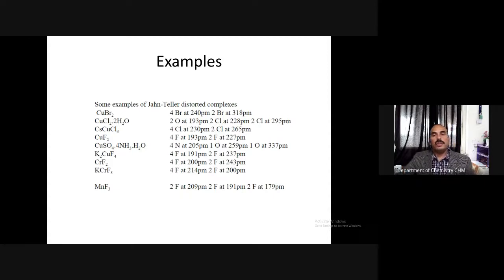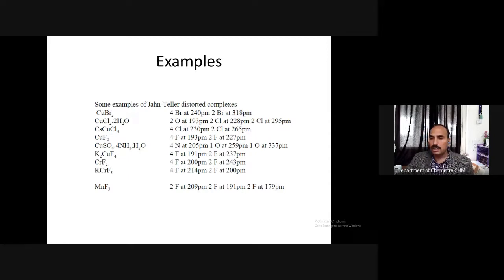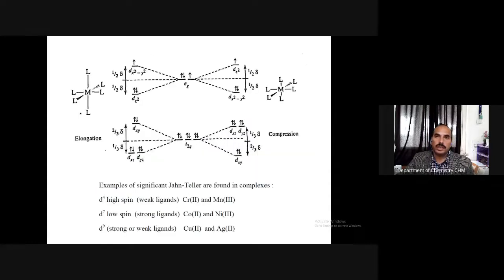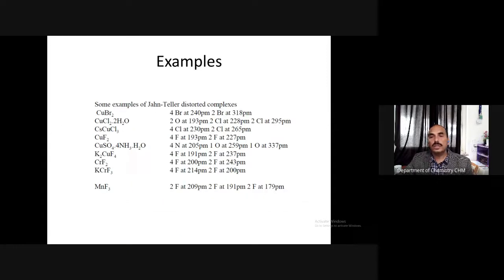This is another application of crystal field theory — explaining distorted structures using Jahn-Teller distortion. Furthermore, when discussing spectra of transition metal complexes, JT distortion is a very useful concept. With Jahn-Teller distortion, where there were initially two energy levels, there are now four energy levels. Therefore, more electronic transitions are possible, resulting in more spectral features. This is how Jahn-Teller distortion helps explain experimental spectral data.